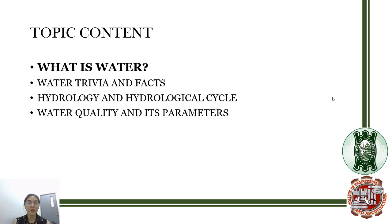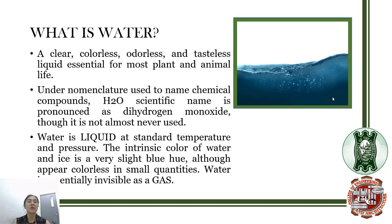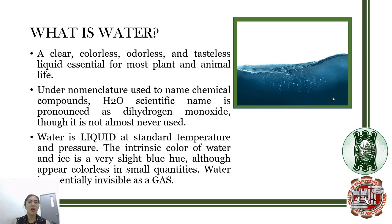We will start with what is water, some trivia and facts about it. The official definition of water is a clear, colorless, odorless, and tasteless liquid essential for most plant and animal life. Its nomenclature is H2O — it contains two hydrogen and one oxygen — having a scientific name of dihydrogen monoxide, although this name is not often used. Water is liquid at standard temperature and pressure. The intrinsic color of water and ice is a very slight blue hue, although they appear colorless in small quantities. Water is essentially invisible in its gaseous state.